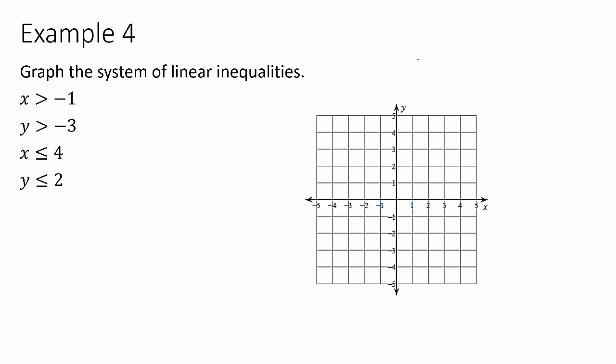I'll remind you here on this example that x is vertical for our lines. So, x is greater than negative one is a dashed line vertically. And it's going to the right of this line, the shading. Greater than negative three, that's a horizontal line. And it would be above that line. Less than or equal to four for x is a vertical line. And it would be to the left of that line. And then we're less than or equal to two for y. So, we draw a horizontal line at two. And it is below.